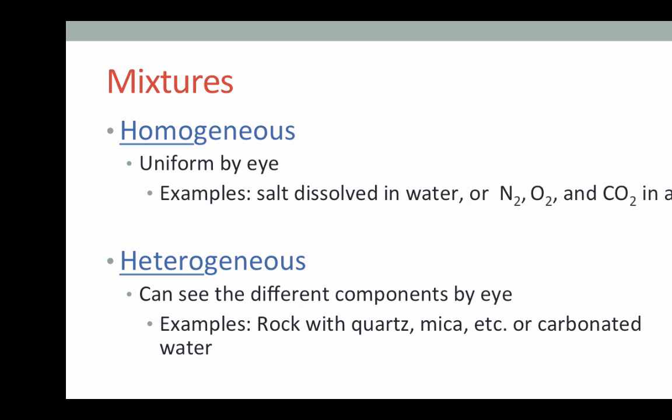Examples of heterogeneous mixtures would be things like a piece of granite. You may think of your granite countertop in your home, where you can see the little flecks of white and gray and black that represent the quartz and the mica and different minerals within the rock. Or you can think of a soda or carbonated water, where you see the bubbles within the liquid. These would be examples of heterogeneous mixtures.